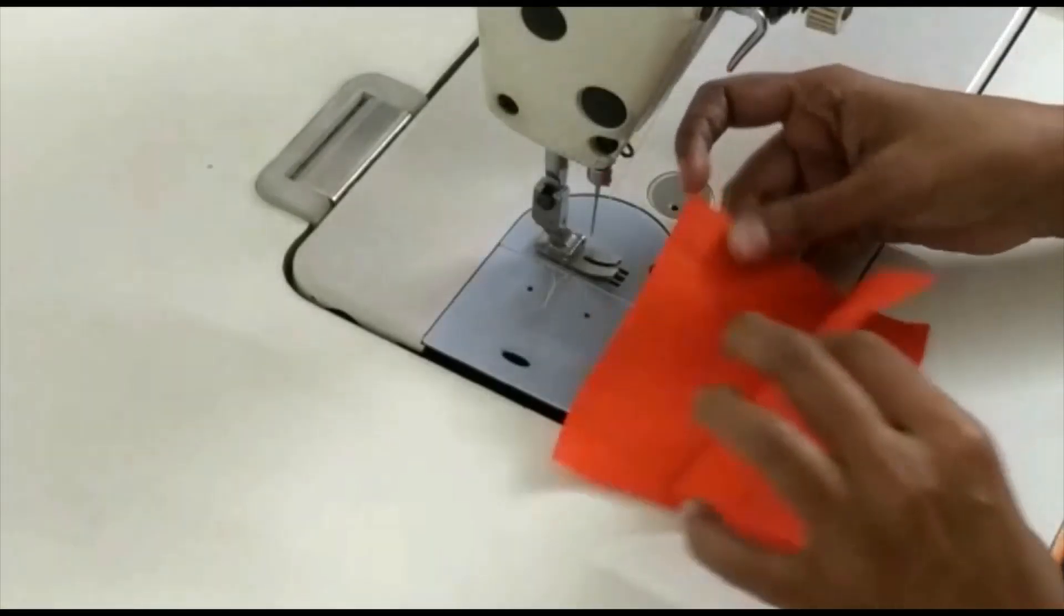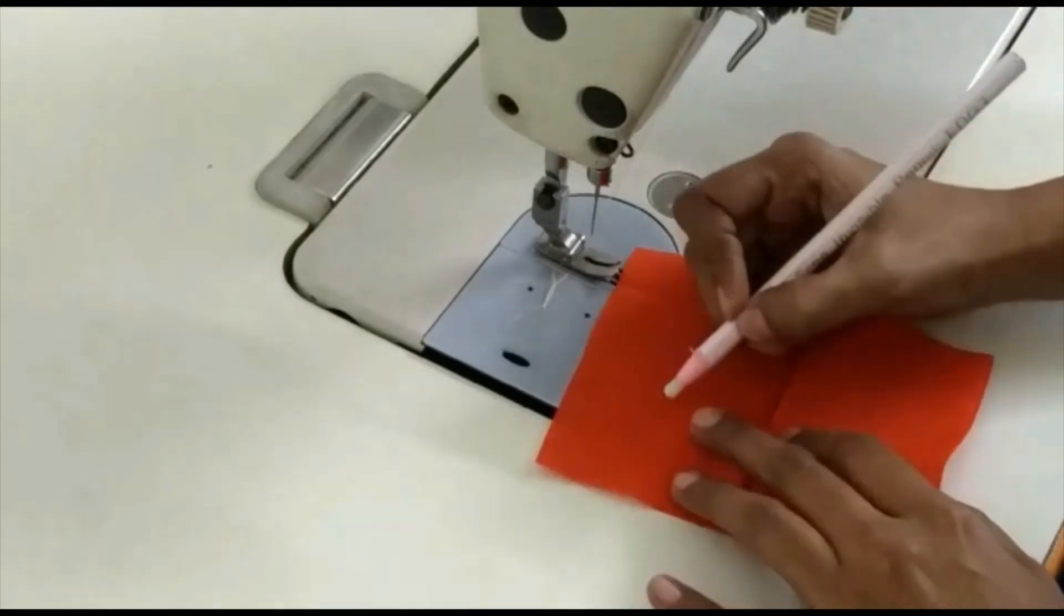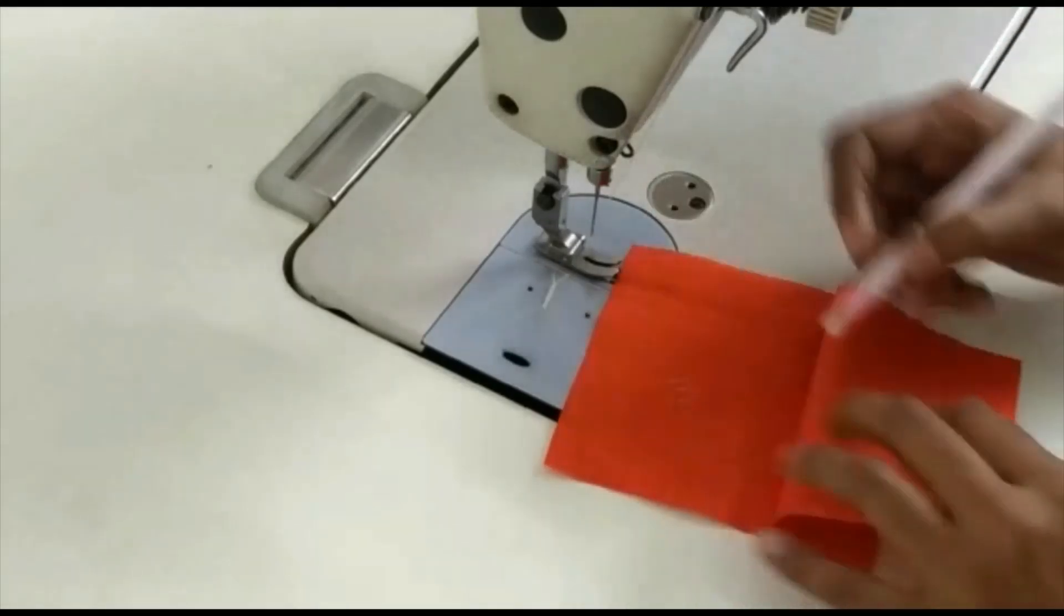Take two pieces of fabrics. There is a change here, the fabric should face wrong on wrong each other, and start sewing.